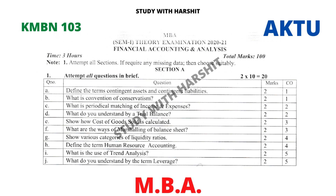Question B: What is the convention of conservatism? Question C: What is the theoretical matching of income and expenses? Question D: What do you understand by trial balance? Question E: Show how cost of goods sold is calculated.